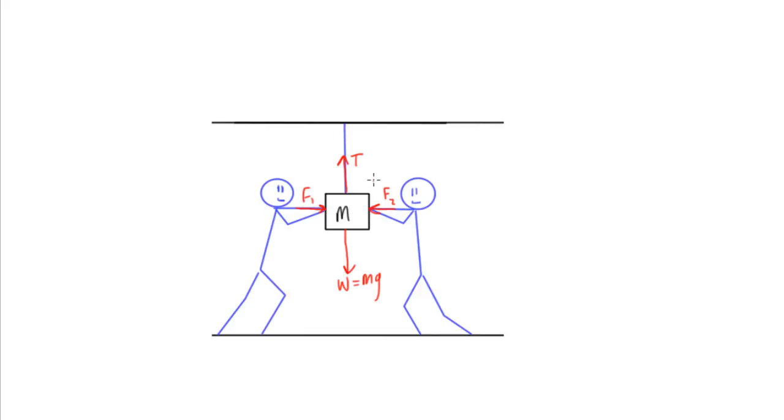So what we can say is, for static equilibrium, the sum of forces has to be equal to zero. But more specifically, we can say that the sum of forces in the X direction equals zero, and the sum of forces in the Y direction equals zero.